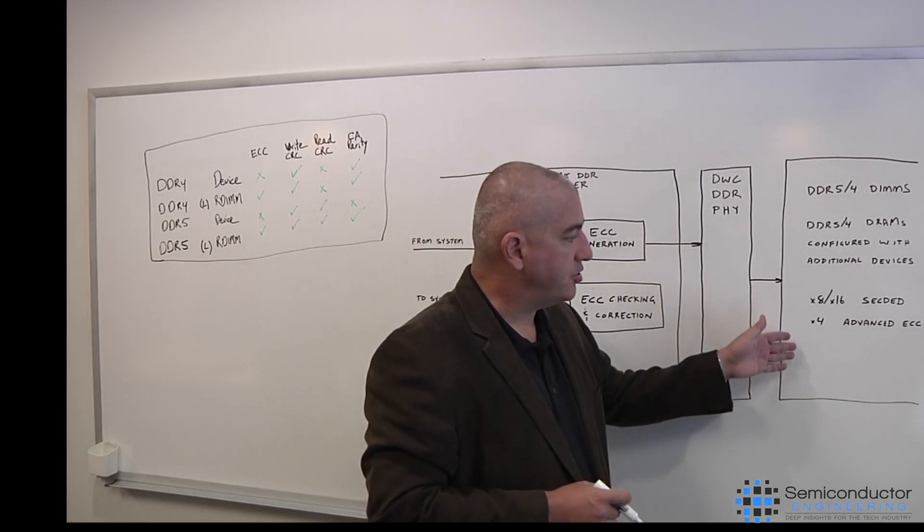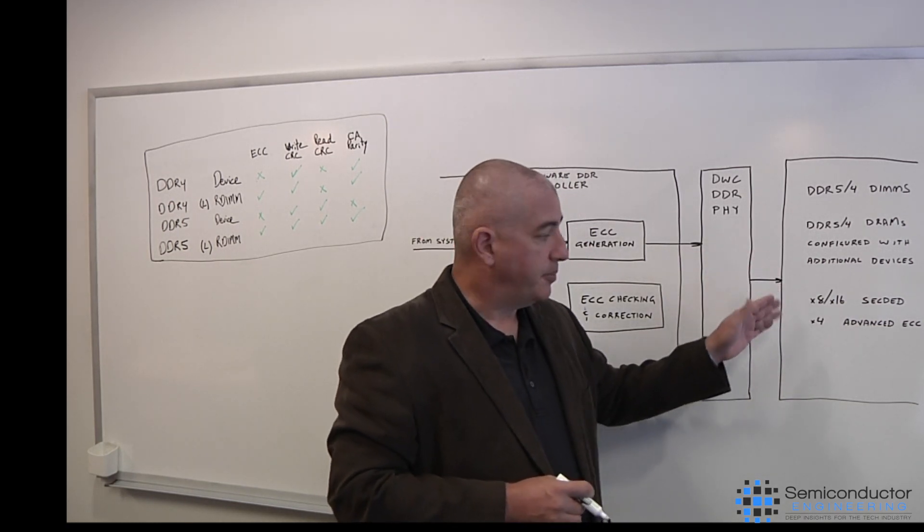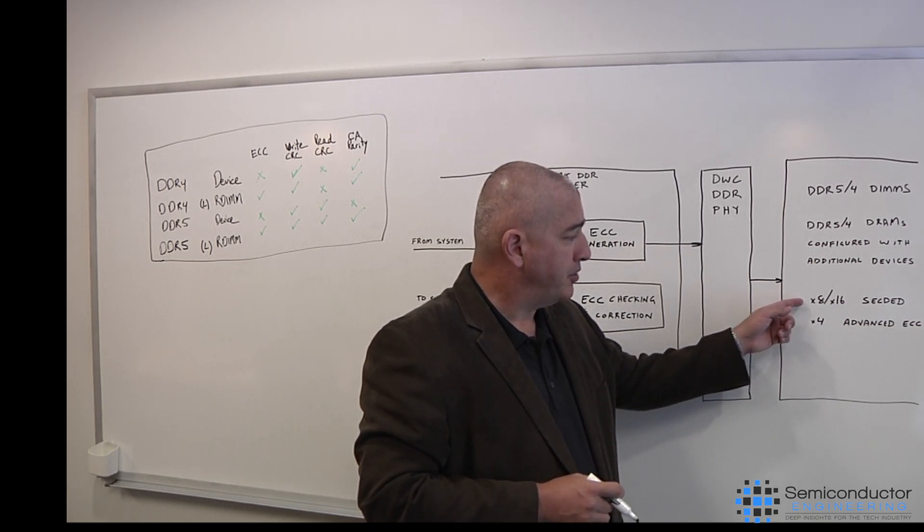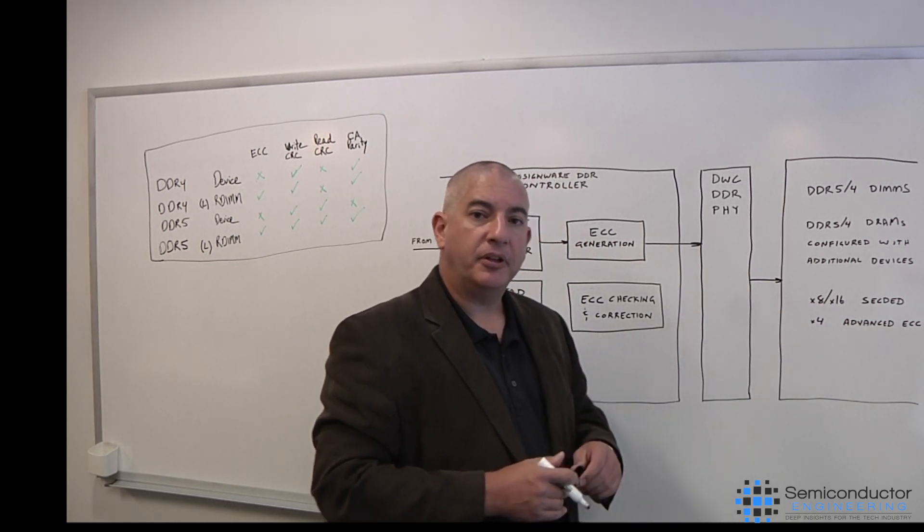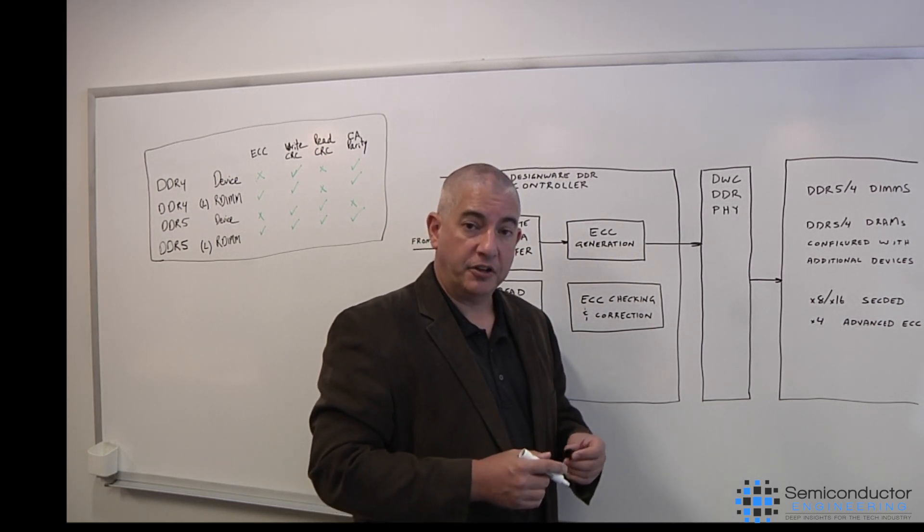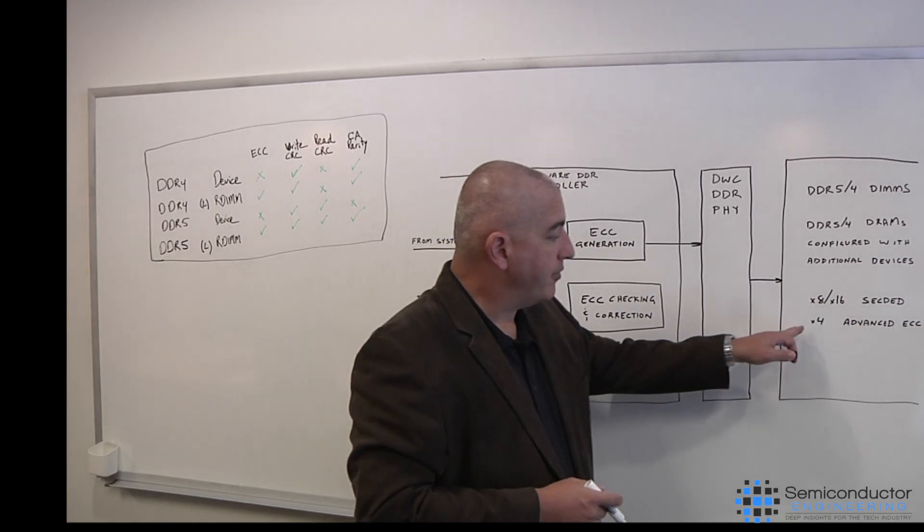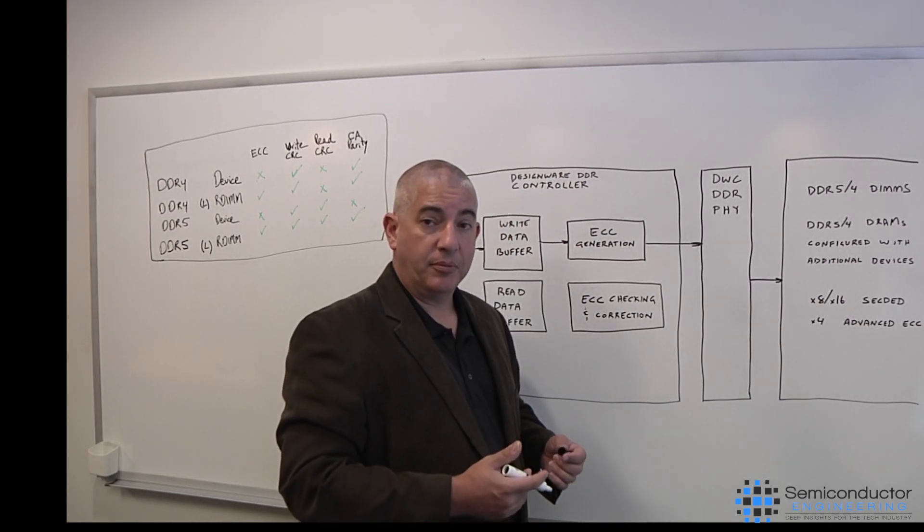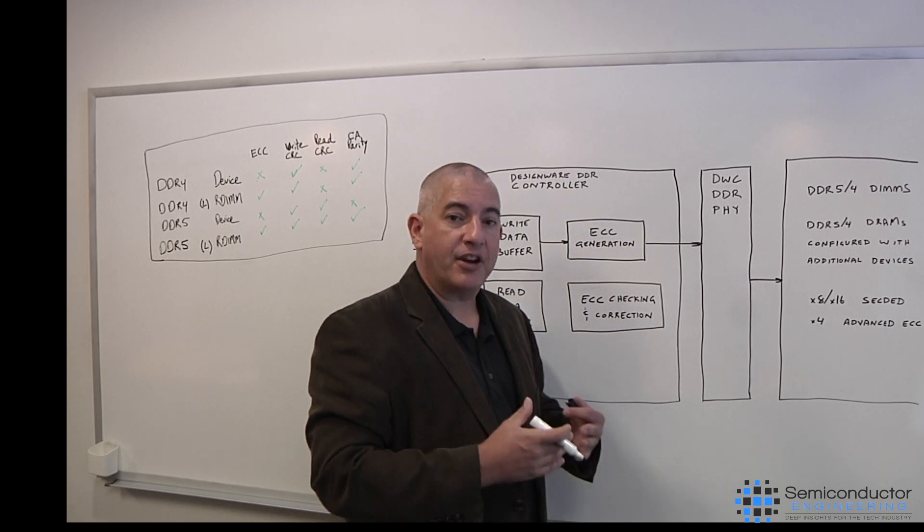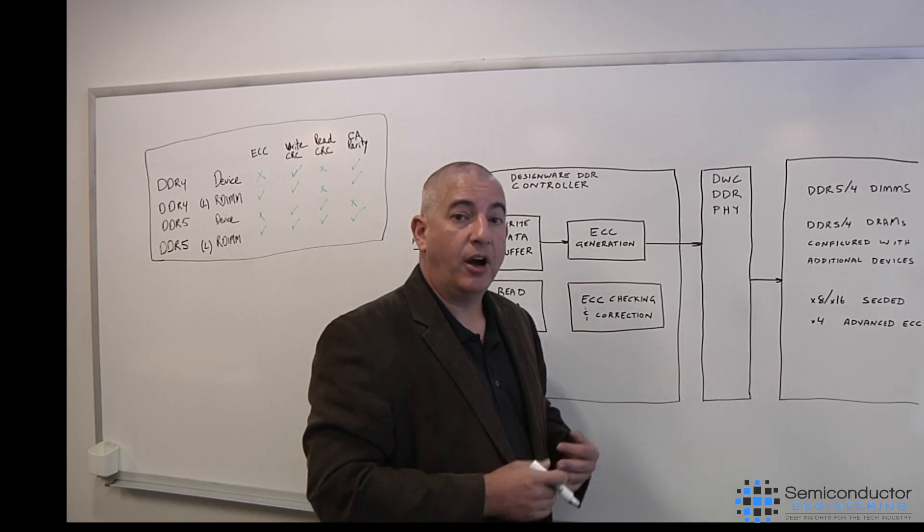And there's a couple different kinds of checking that you can do with the data, depending on how wide your actual DRAMs are. If you're using BI8 devices or BI16 devices, typically you'll do a SECDED implementation, which stands for Single Error Correction Dual Error Detection. If you're using BI4 devices, then you can use an advanced ECC algorithm, sometimes called chip kill, that allows one of the devices to actually go offline and the system to still operate.